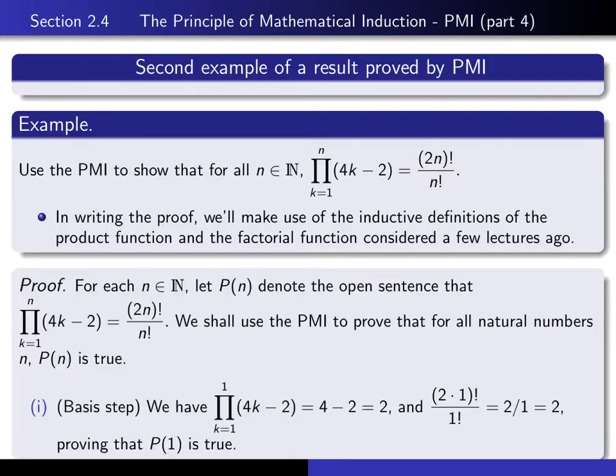So this is how we begin the proof. I'm first telling you what my sequence of open sentences is. For each n in the natural numbers, we let P(n) denote the open sentence that we have this product formula. The product of 4k minus 2, as k runs from 1 to n, is equal to 2n factorial divided by n factorial. And I warn the reader that I'm going to use principle of mathematical induction to prove it.